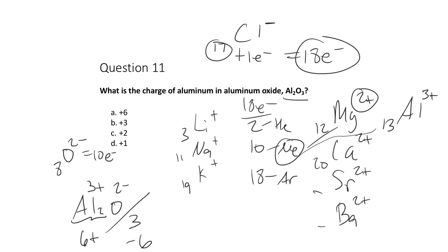A compound with no charge indicated must be neutral. Al₂O₃ is neutral because three O²⁻ ions and two Al³⁺ ions balance: (3 × −2) + (2 × +3) = 0. In a real ionic solid, these ions repeat in three dimensions with the attractions between opposite charges and repulsions between like charges maintaining that 3:2 ratio. The charge of aluminum in Al₂O₃ is 3+.